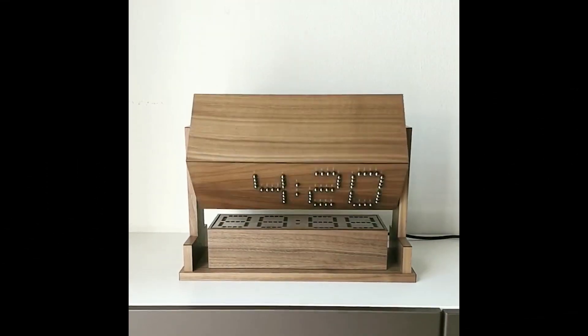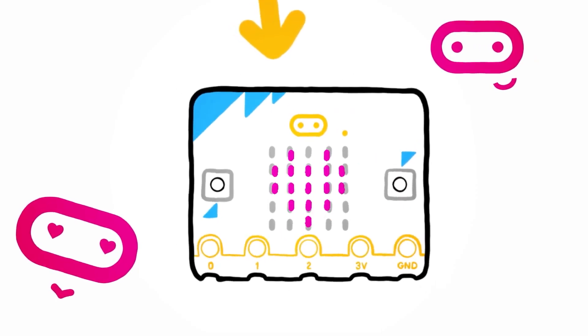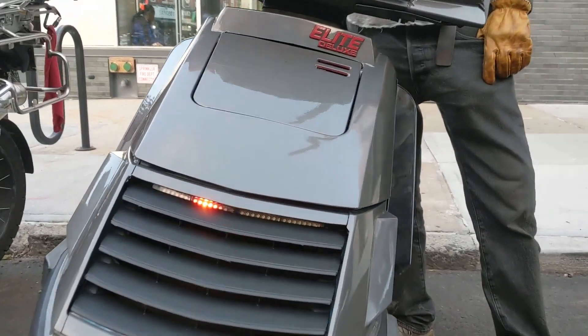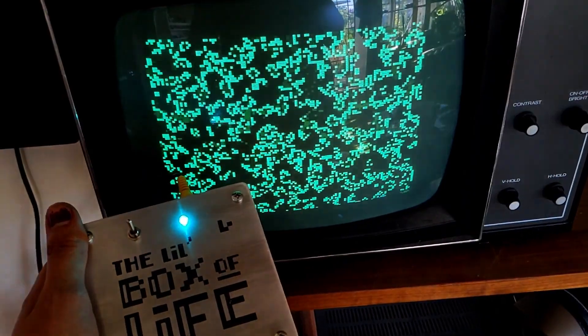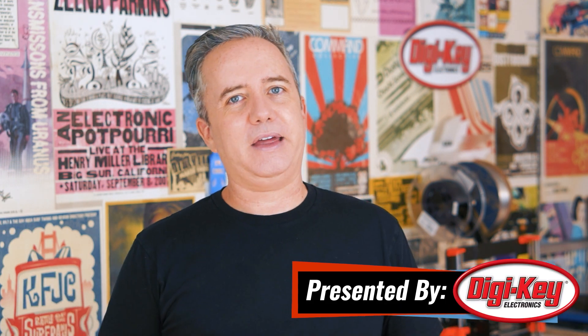This week on Maker Update: an attractive clock, robots on the ceiling, micro bit gets an upgrade, a Cylon scooter, pocket model kits, a box of life, and OLED fangs. Hey, I'm Donald Bell. Welcome back to another Maker Update, the weekly show where I update you on makery things.